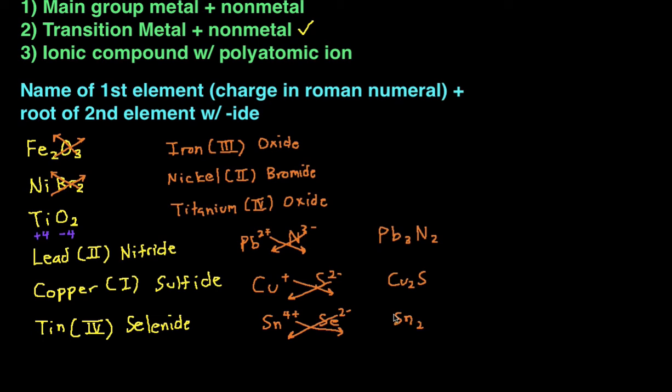And I just realized this is an example that the crisscross method actually doesn't work. Because if we crisscross, we get Sn2Se4. And that's not the best because if we just had SnSe2, that would work better. Because it's positive 4 charge. So if you have 2 of these, it's negative 4, so it cancels out. So you can do the crisscross method, but you just want to make sure it's in the most reduced form. And we divide both these by 2, and we get that.